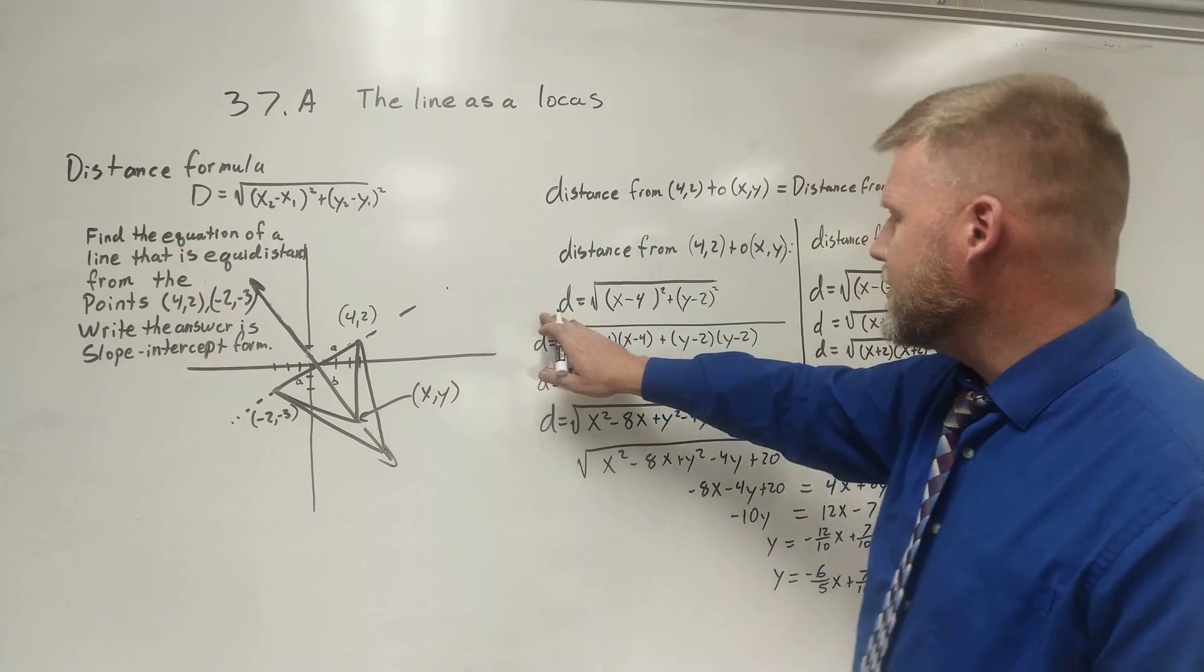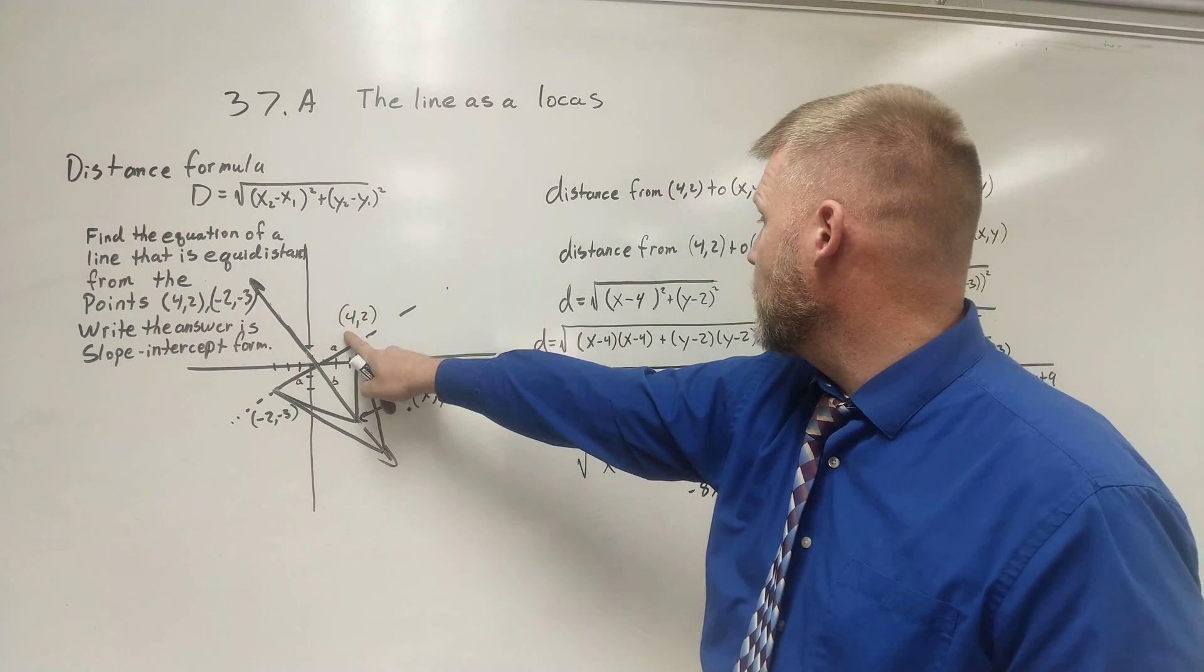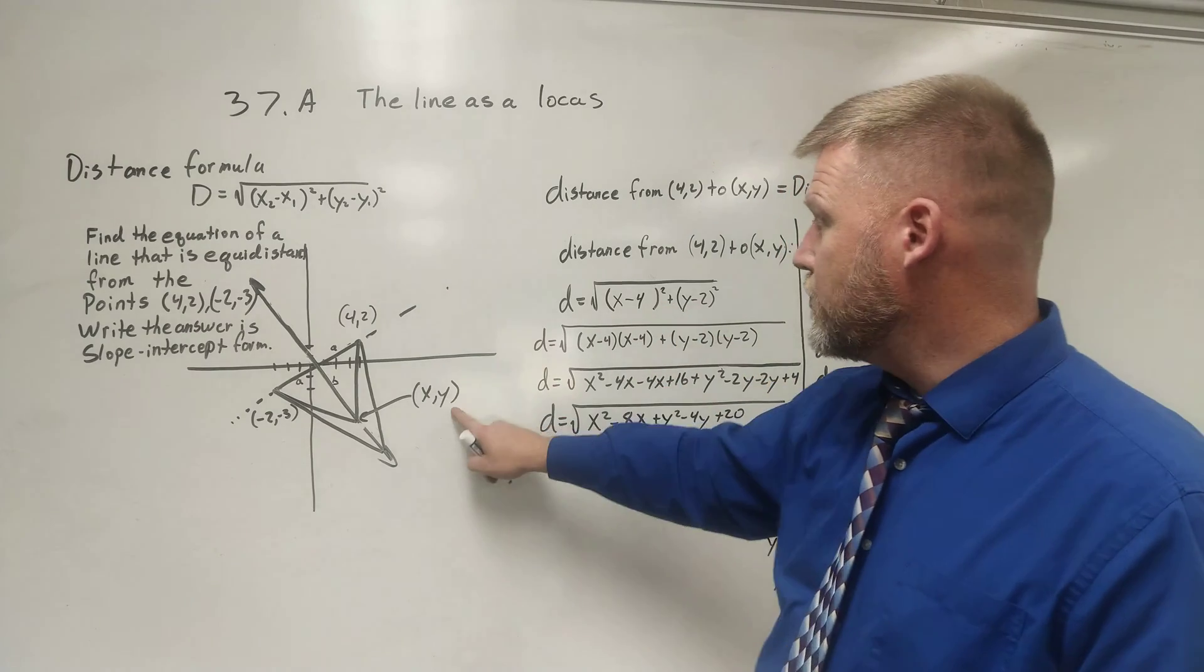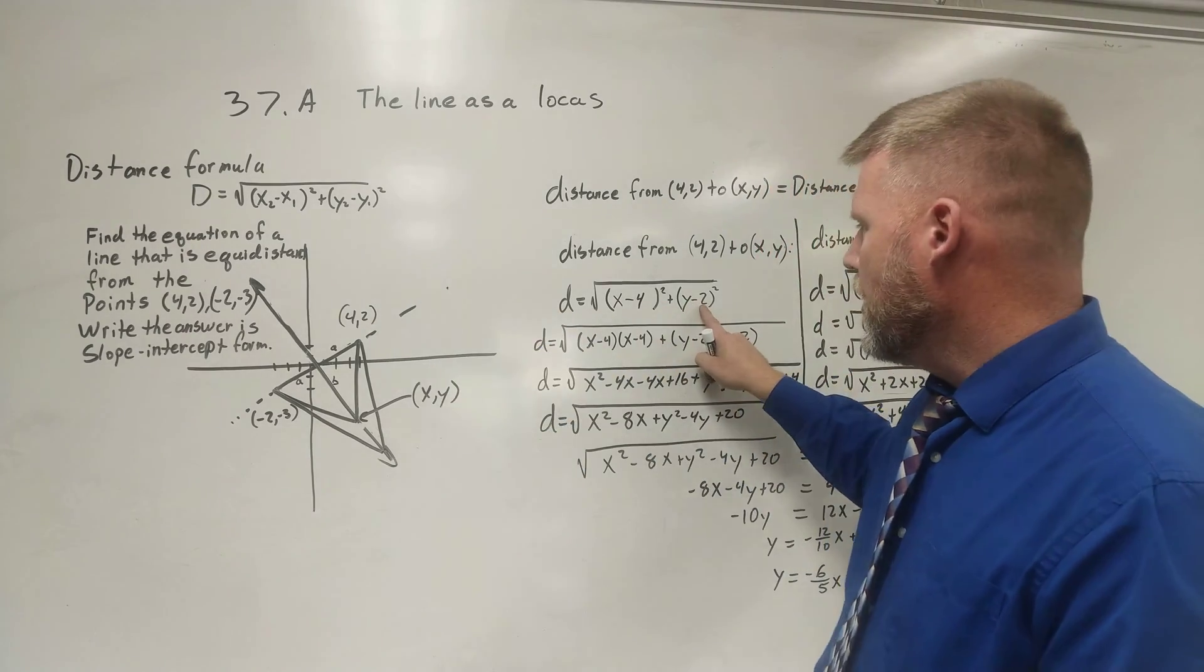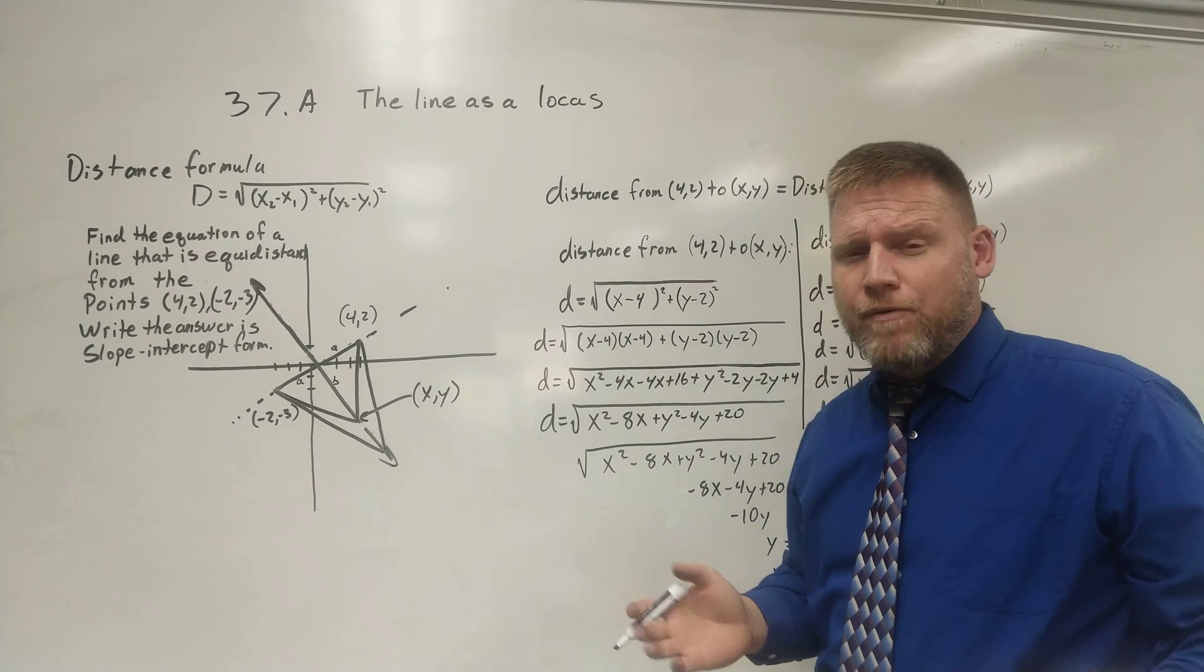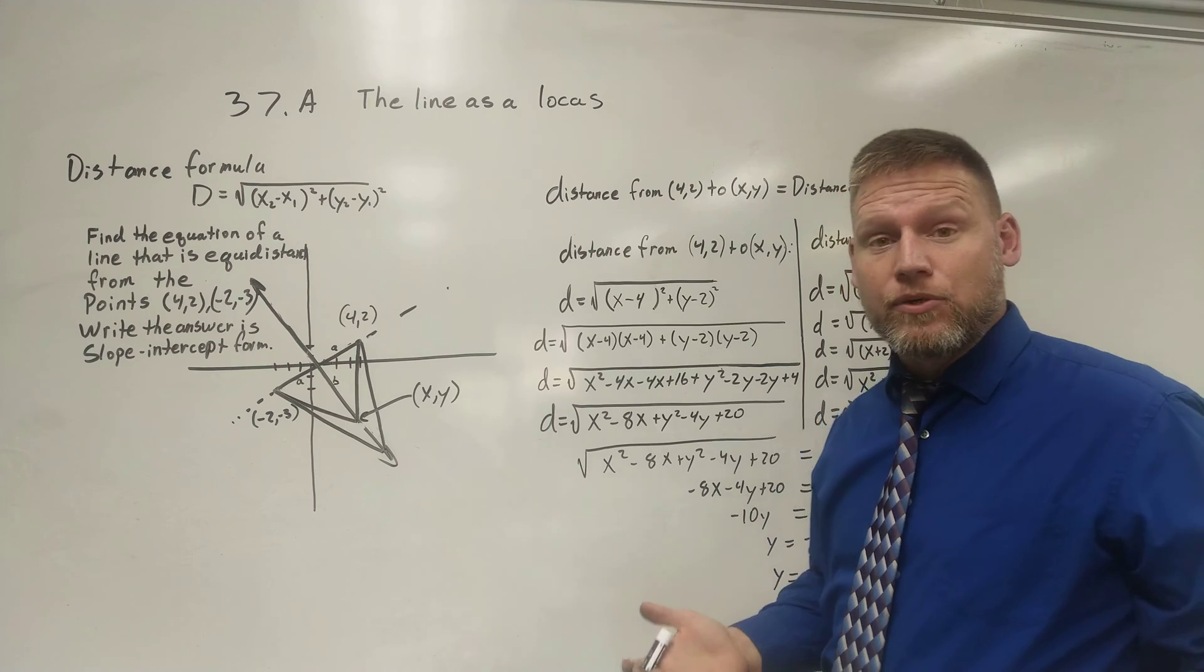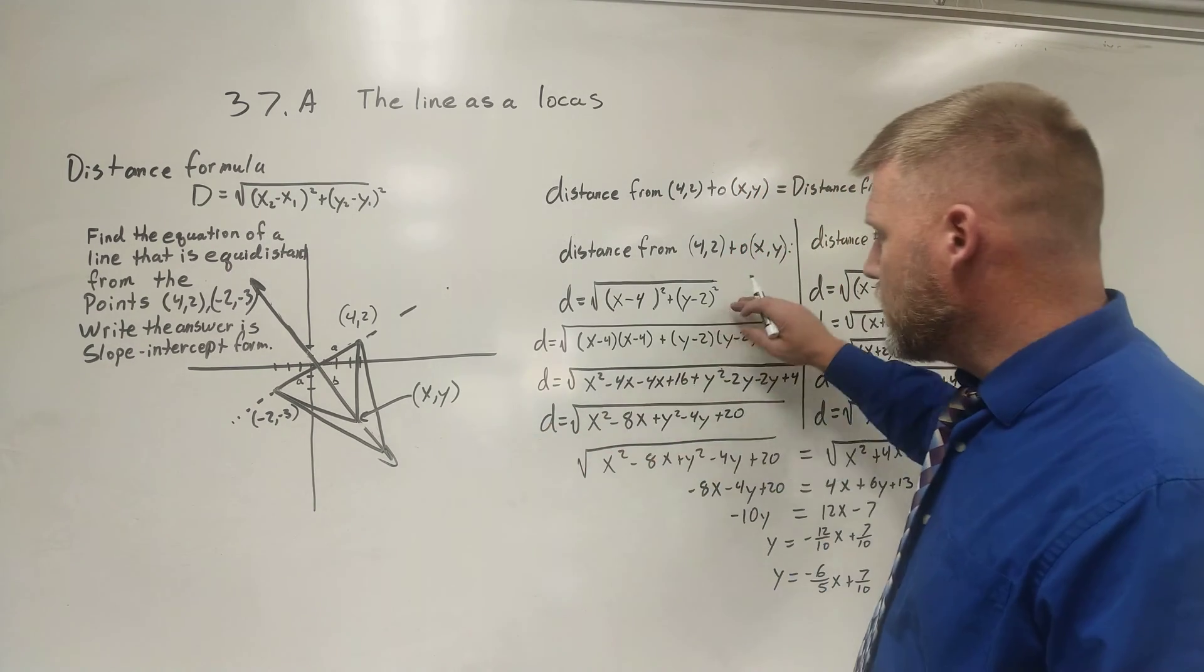So I just say distance equals x minus 4 squared, plus y minus 2 squared. We've been dealing with the distance formula on finding the distance between two points. We've always just had the two points given to us. This one, we're going to leave a variable in it. I go ahead and work that out.